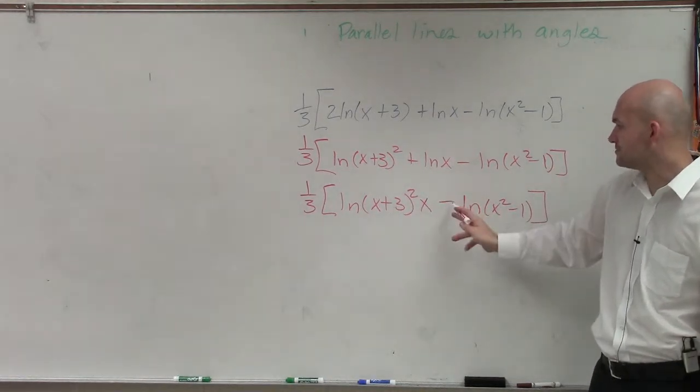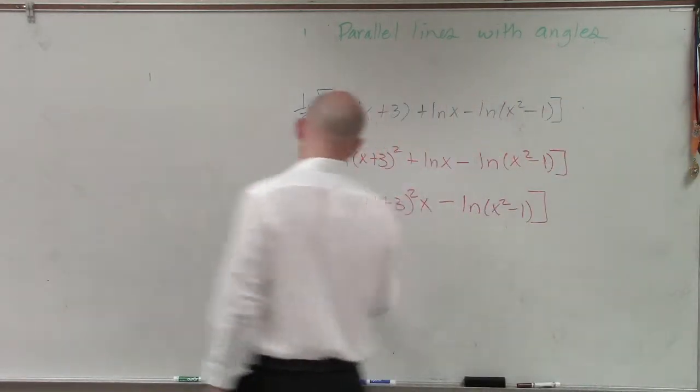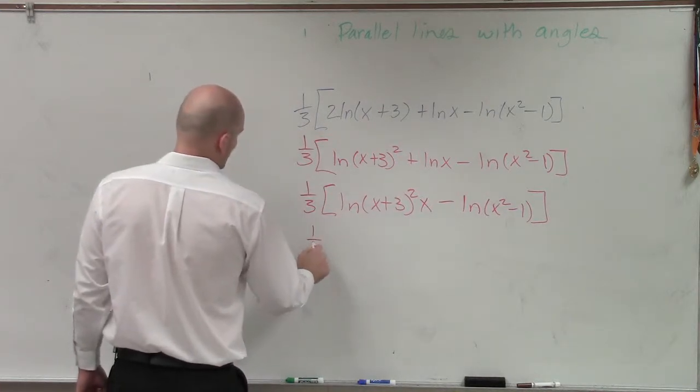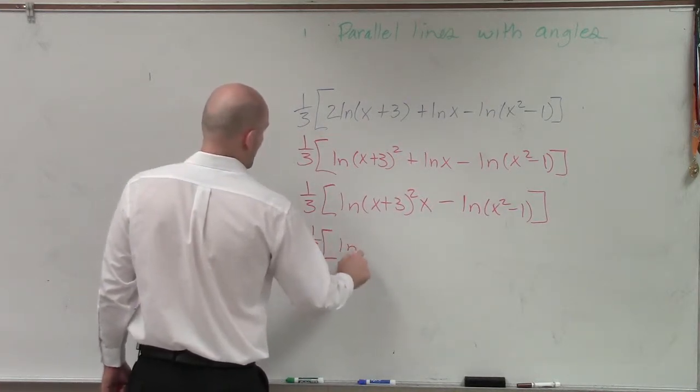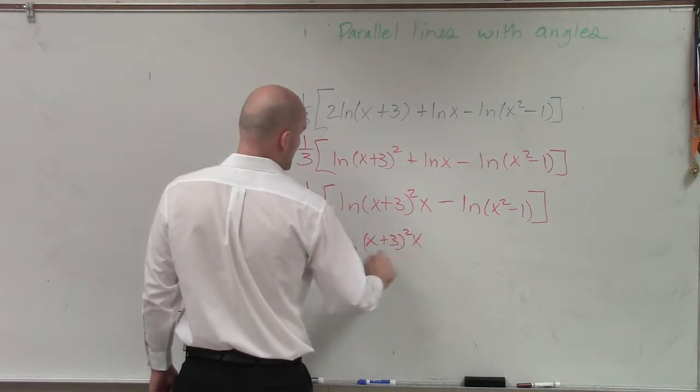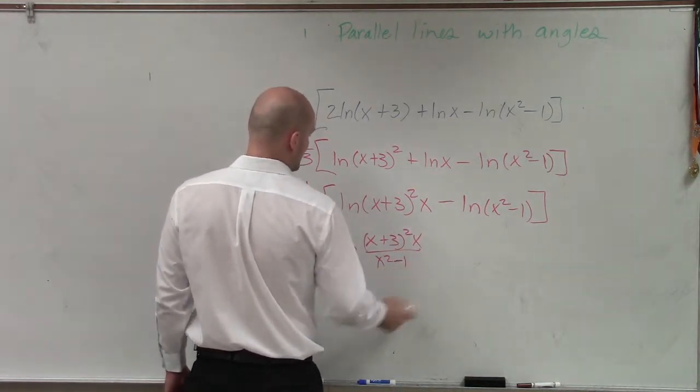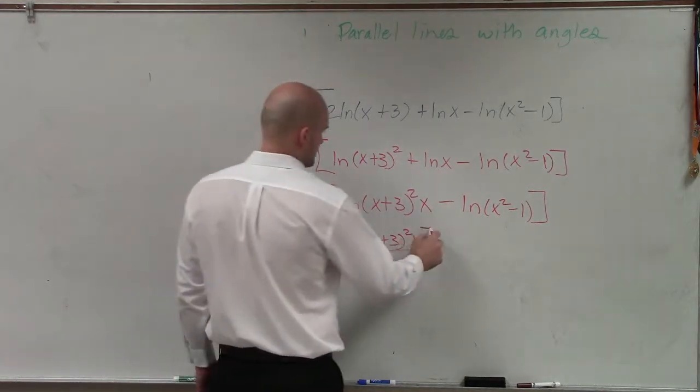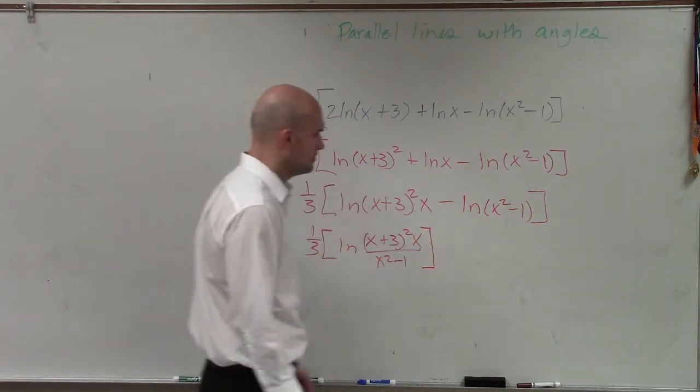Then I have subtraction, so I know that's going to be a division problem. So I have now one-third ln of (x plus 3) squared times x, divided by (x squared minus 1).